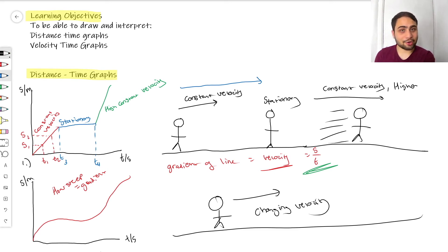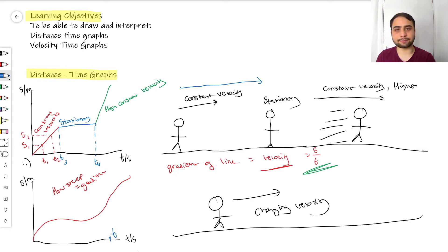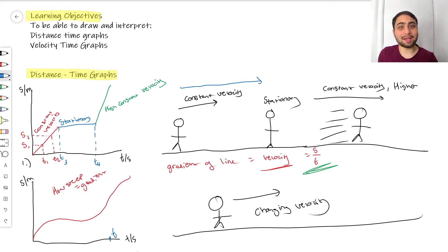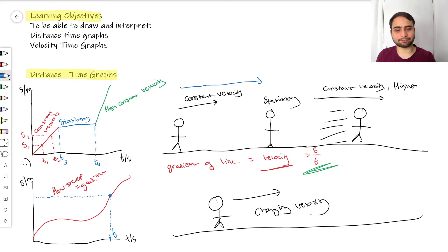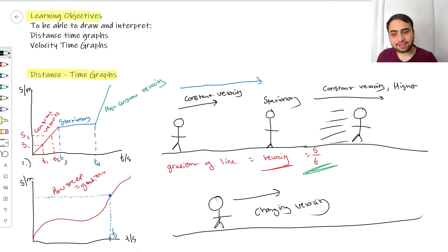This is a very common type of question: say a question asks you to work out the velocity of the person at time T — it could be 10 seconds, 50 seconds, doesn't matter. How do you work out the velocity when the gradient is curved and constantly changing? Well, you go up to time T on the x-axis, hit the graph, and place a point there. Then you draw something called a tangent — a line that touches the curve only at one point.